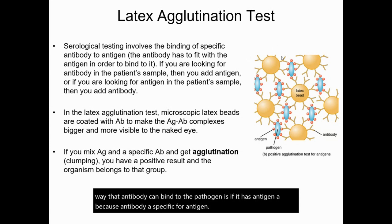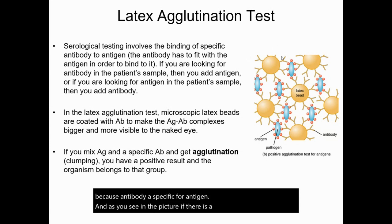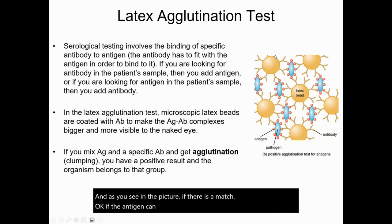If there is a match — if the antigen can be bound by the antibody — we're going to see agglutination, that's clumping.